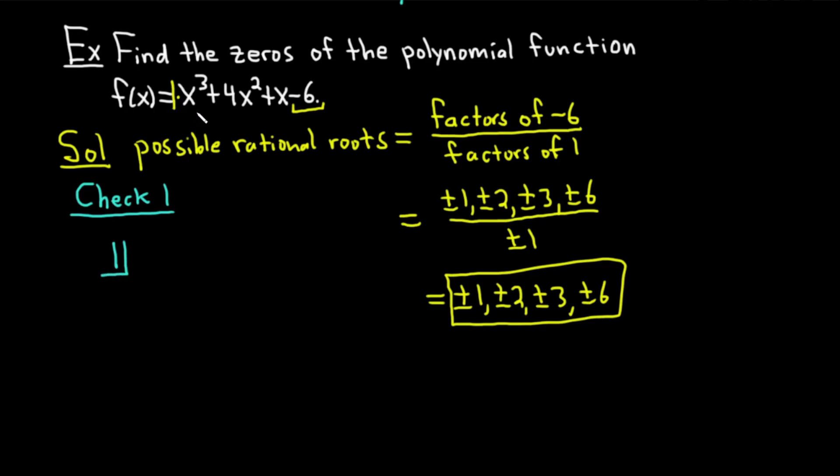So to check 1, what we do is we write down the 1 like this, and we put a little bracket. And we're going to use something called synthetic division. So you write down now all the coefficients of your polynomial. So in this case, it'll be 1, 4, 1, -6. So 1, 4, 1, -6. And then you draw a line. If you're missing any powers of x, you should put zeros here for those missing powers.